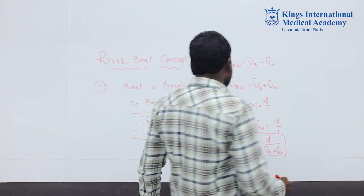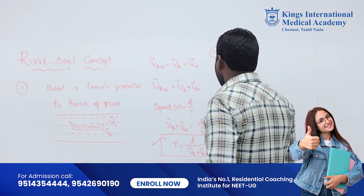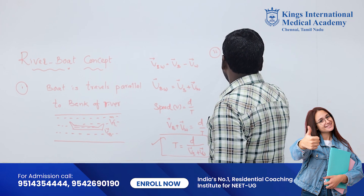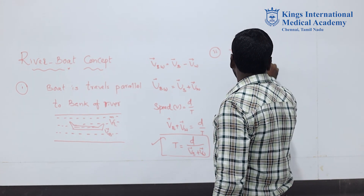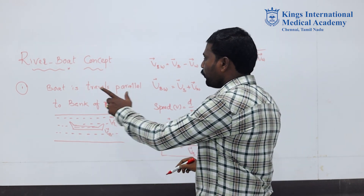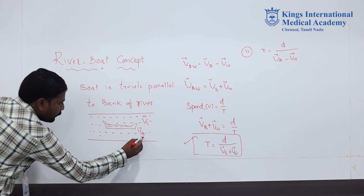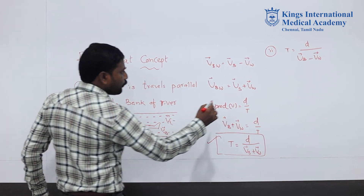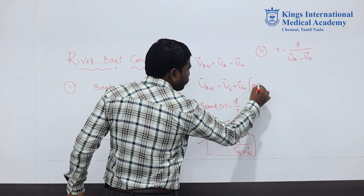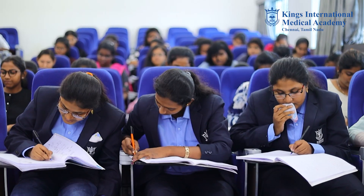In the second condition, time taken is D divided by (VB bar minus VW bar), which applies when the boat travels in the opposite direction. For example, boat traveling from A to B is the downstream condition, and boat traveling from B to A is the upstream condition.